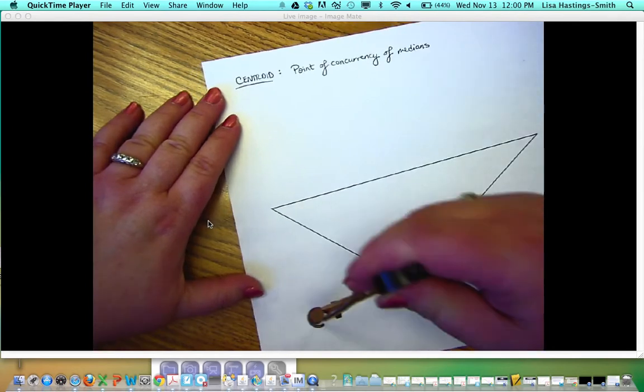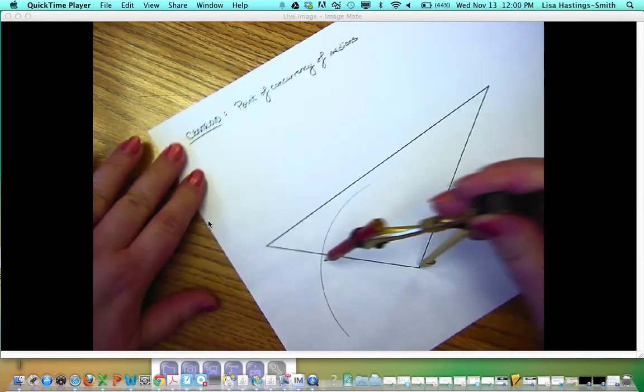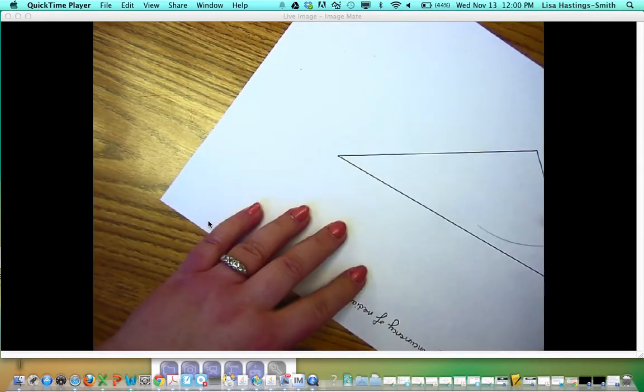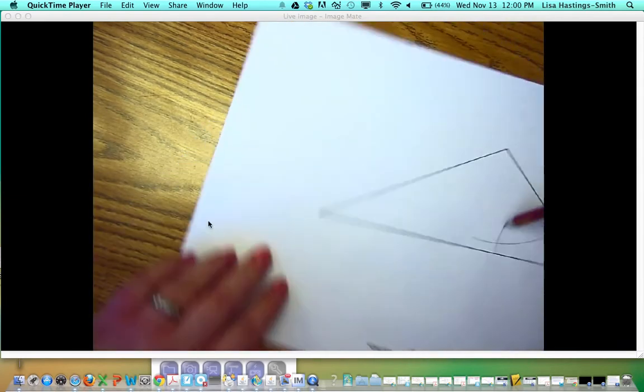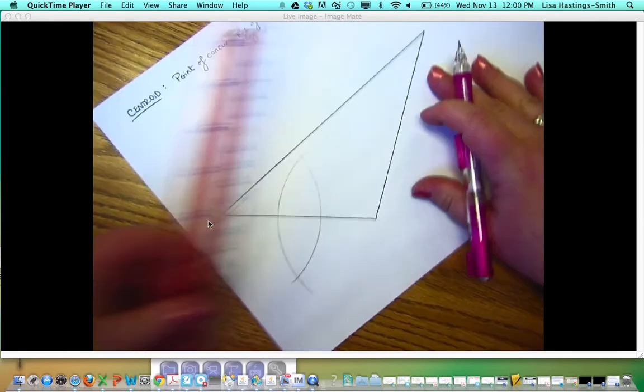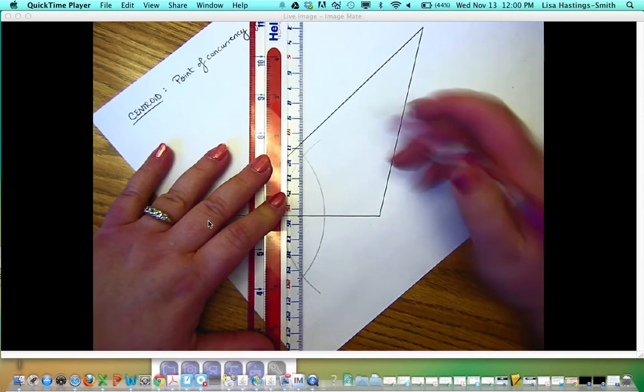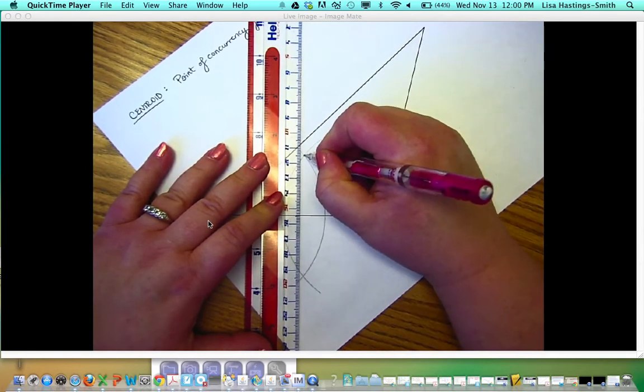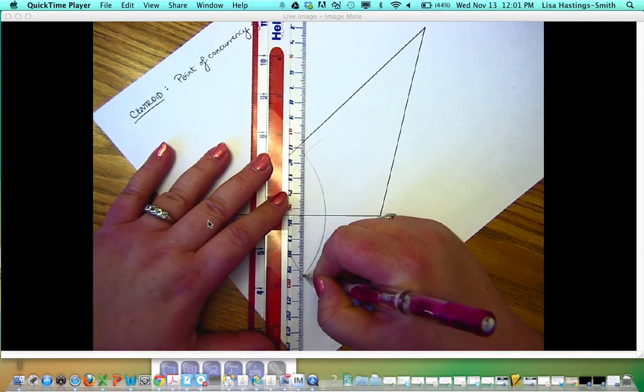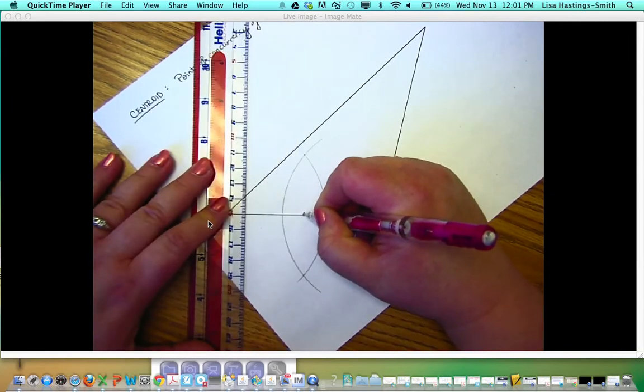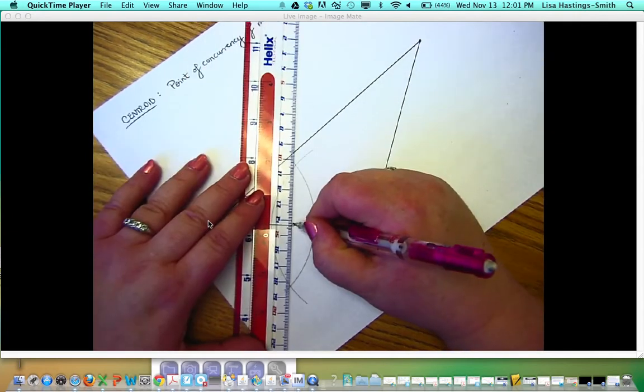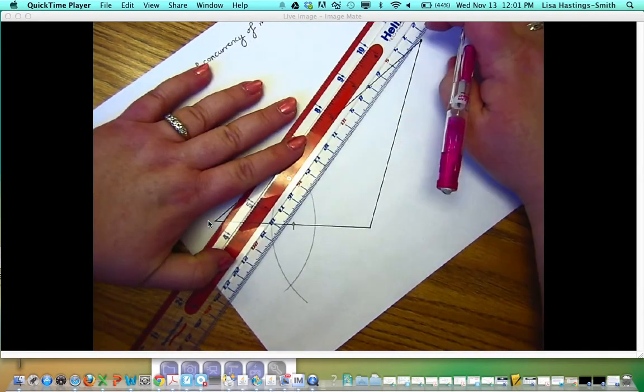From this endpoint, we make an arc. Remember, the compass has to be open more than half the length of the segment. And then from the other endpoint, the same amount of opening. If we were going to draw the whole perpendicular bisector, we would draw down the middle like that. But since we're really just looking for the midpoint of the segment, I'm just going to make a mark which indicates the midpoint of the segment. And then I'm drawing from the vertex to this midpoint, and that will be a median.